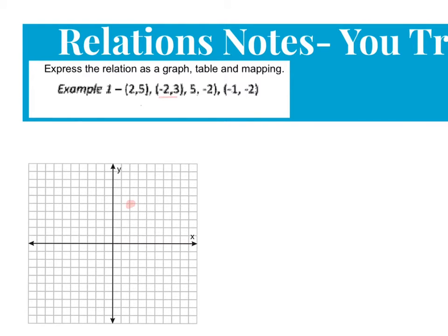And then we've got this point, negative 2, 3, so over 2 and up 3. Our next point is 5, negative 2, so over 5 and down 2.